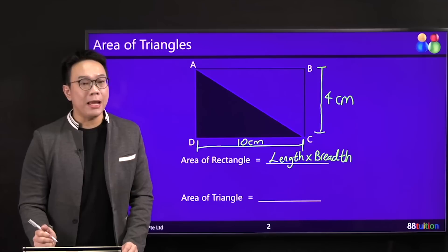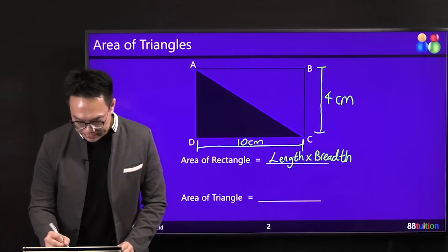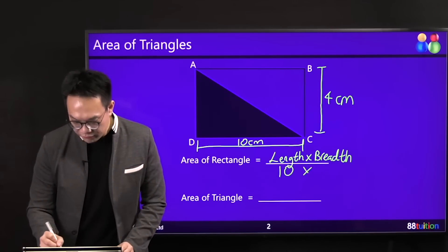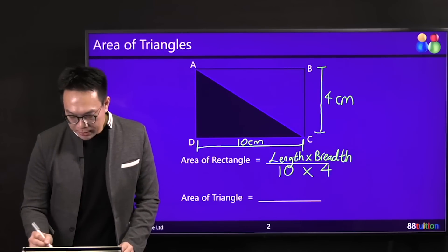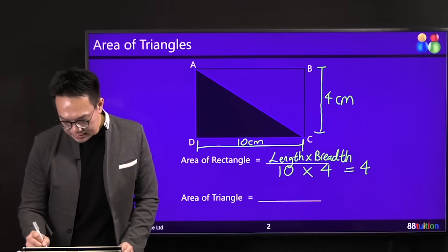Length long, alright? The length means the long part which is your 10cm, times breadth—breadth means the width also. It's 4. 10 times 4 is 40cm squared.